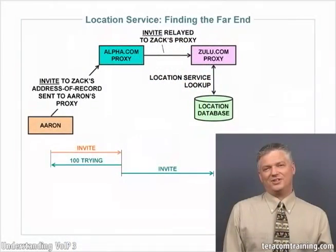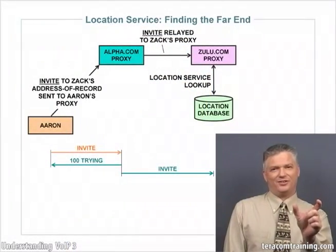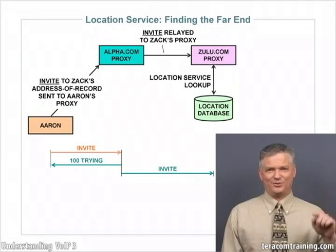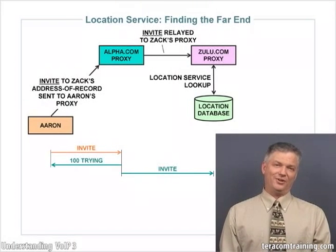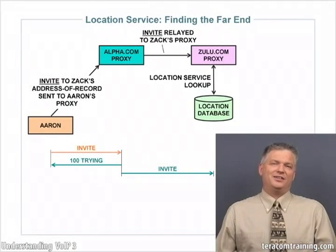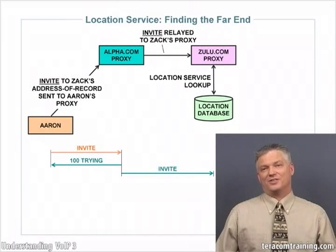The next step, once we get the invite message at the called party's SIP server, is we have to find the far end telephone. The way that happens is that the called party, so this is Zack's SIP server, uses the location database to do a lookup. It's going to take this address of record that it received, which is Zack at Zulu.com, and it's going to do a database lookup in the location server, and it's going to get an answer back. In this case, it's an IP address that comes back.